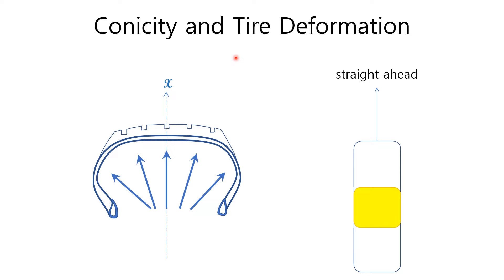In that case, when the tire is inflated by air pressure, the tire can maintain its symmetric shape with respect to the longitudinal center line. Therefore, the tire is rolling straight ahead in this picture.